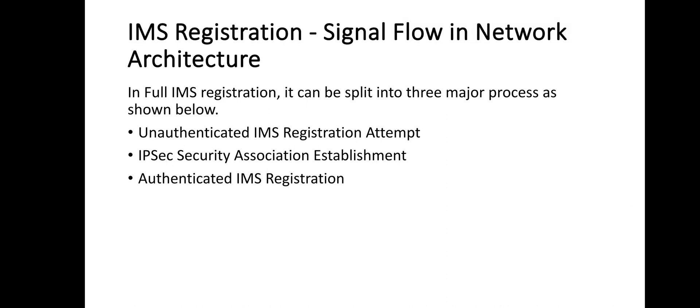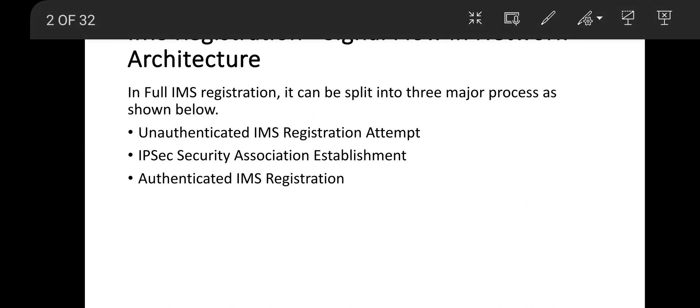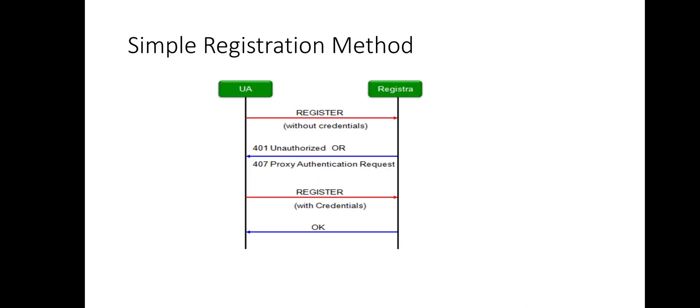Welcome to Telecom Book. Today's topic is IMS registration. IMS registration has three parts: first, the unauthenticated IMS registration attempt; second, IPsec security association establishment; and third, the authenticated IMS registration. We will go through the simple registration process first.